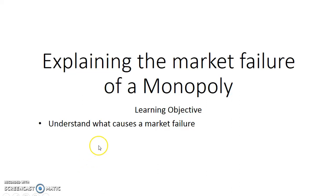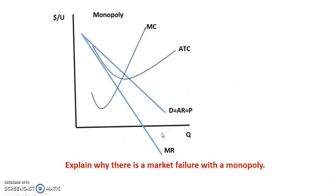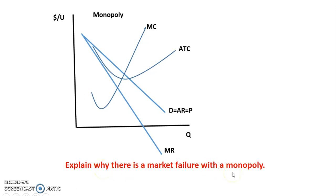In this screencast, we're going to be explaining the market failure of a monopoly. We are going to understand what causes market failure. The graph that we have here, you can see, is a monopoly. And the prompt that we have is explaining why there is a market failure with a monopoly.